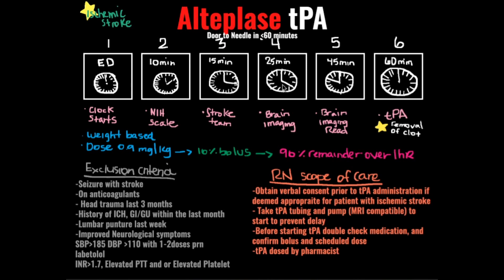Step four is within 25 minutes: you want to make sure the patient is en route for brain imaging, whether that includes MRI or CT scan. MRI is the preferred method; however, if the patient has a pacemaker or any type of aneurysm clips, that is a contraindication, so you would consider a CT scan instead. En route to MRI, the nurse should be prepared with an MRI-compatible pump and IV tubing in case TPA is deemed appropriate to start.